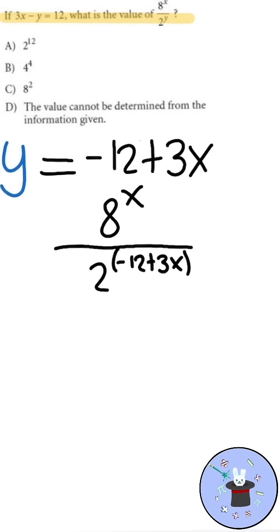In order to simplify this, we must put 8 as a base of 2. We know 8 is 2 cubed, so 8 raised to x should be 2 raised to 3x.